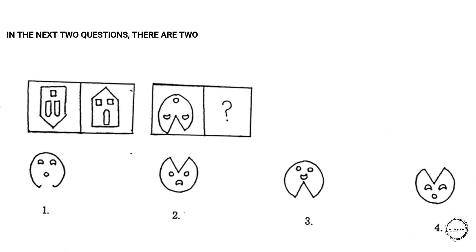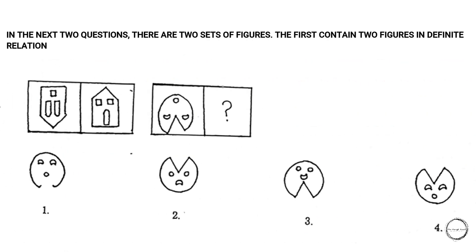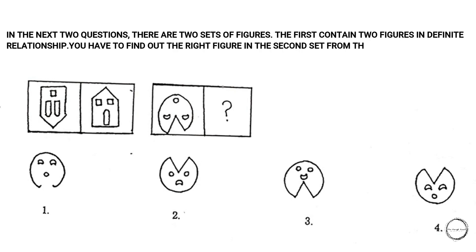For the next two questions, there are two sets of figures. The first set contains two figures in a definite relationship — you have to find the right figure in the second set from the options given. In the first option there are two doors and one window and the house is upside down. In the second the face has two lips and one eye, so the right answer is option two.